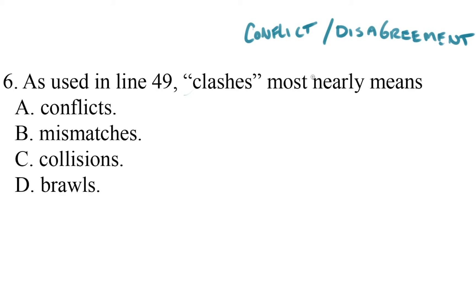So let's expose the answer choices. Would you look at that — we got 'conflicts' right there. Now I should say, I didn't know that 'conflicts' was an option; I really set these up so I could do it for the first time. But even if I hadn't come up with 'conflicts' as my prediction, other predictions could have gotten me here. Notice how 'disagreements' could have also gotten this answer.